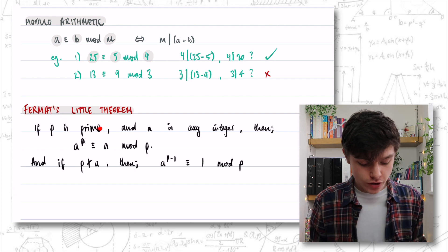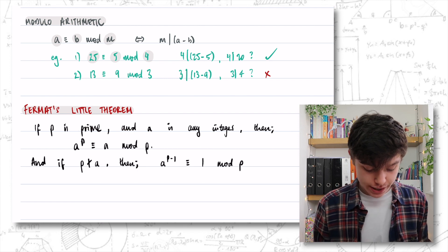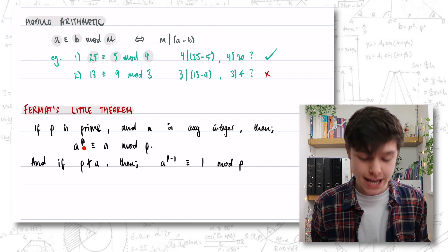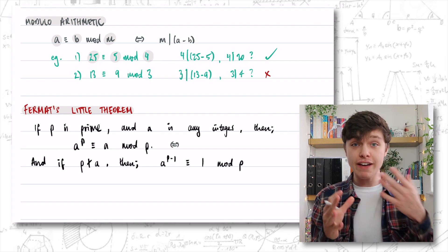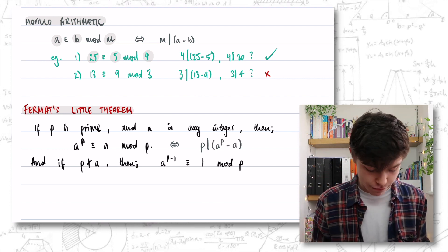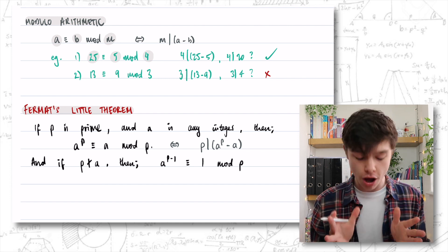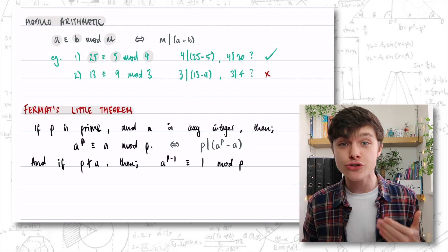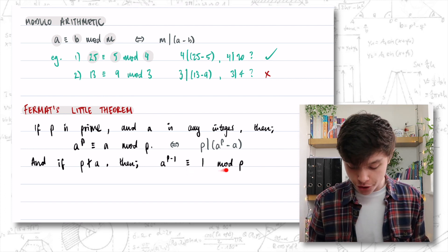Now we're being asked to use Fermat's Little Theorem. If P is a prime number — meaning it's only divisible by itself and 1 — and A is any integer, then we can say A to the power of P is congruent to A mod P. Furthermore, if P does not divide A, then we can say A to the power of P minus 1 is congruent to 1 mod P.